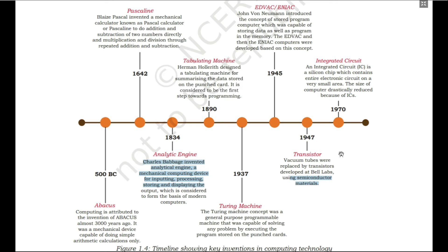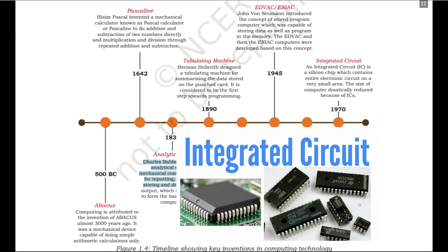Transistors made the computer very small in size. But still, in 1947, we were not in the modern era of computer. The modern era of computer started with the evolution of the integrated circuit, that means IC. An IC is a silicon chip which contains an entire electronic circuit in a very small area, meaning multiple transistors can be packed together on a single IC.